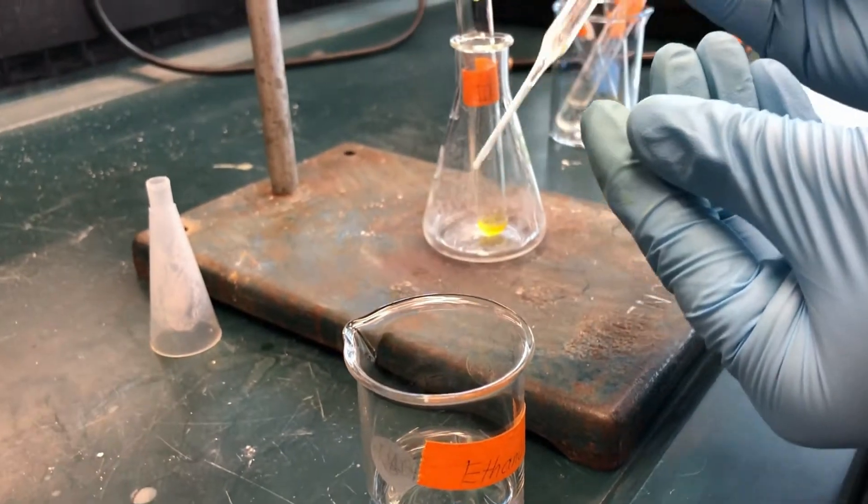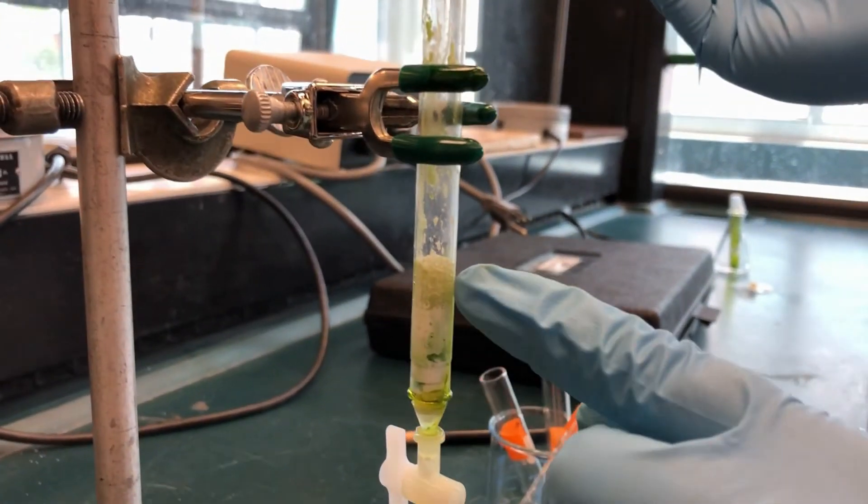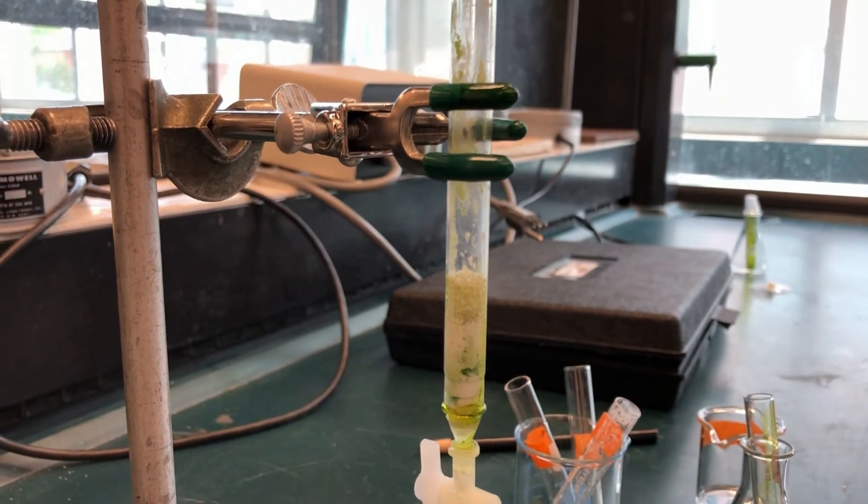If the green band does not begin to move, change to the more polar solvent ethanol. We add ethanol to move the green band down.